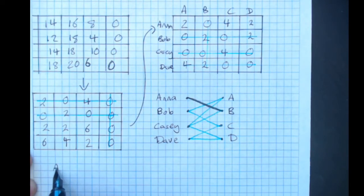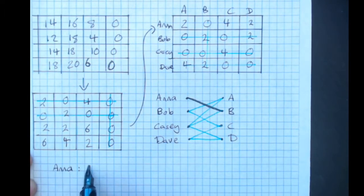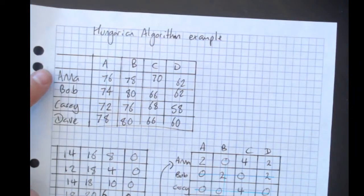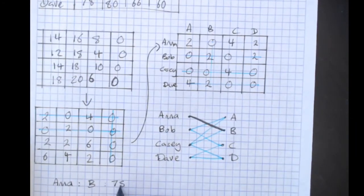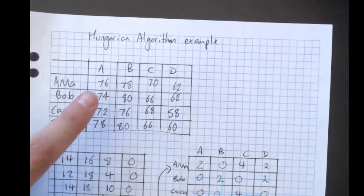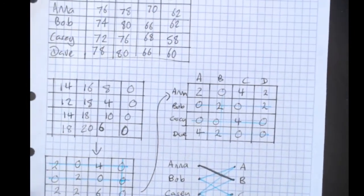So our assignment is Anna does B and we go all the way up to the top. And that is 78 for Anna. I haven't actually said in this example what it is. It might be 78 minutes or weeks or hours.